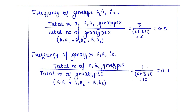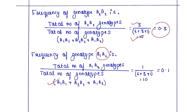The frequency of genotype A2A2 is the total number of A2A2 genotypes divided by the total number of genotypes. Total genotypes is ten and A2A2 occurs three times, so 3 divided by 10 equals 0.3. The frequency of genotype A1A2 is 1 divided by 10, which equals 0.1. This is all about genotype frequency.